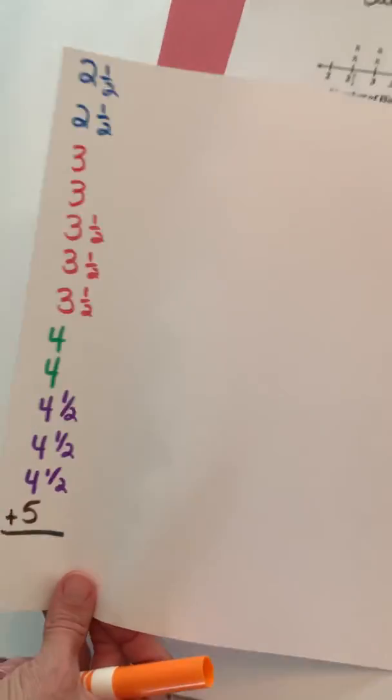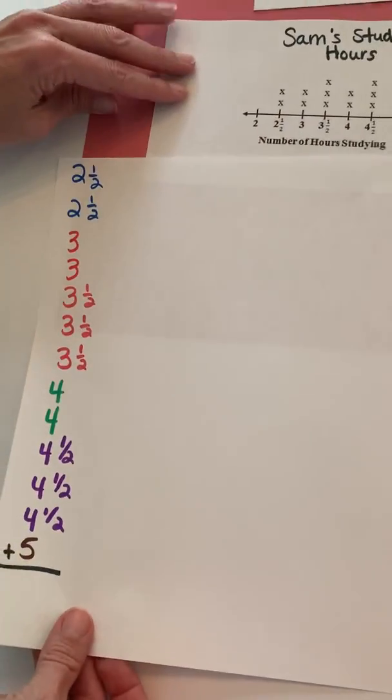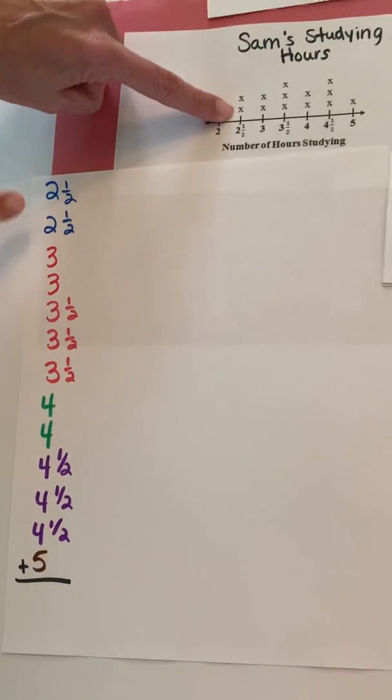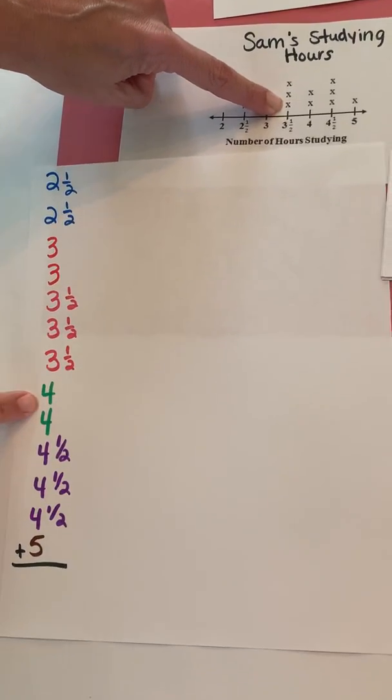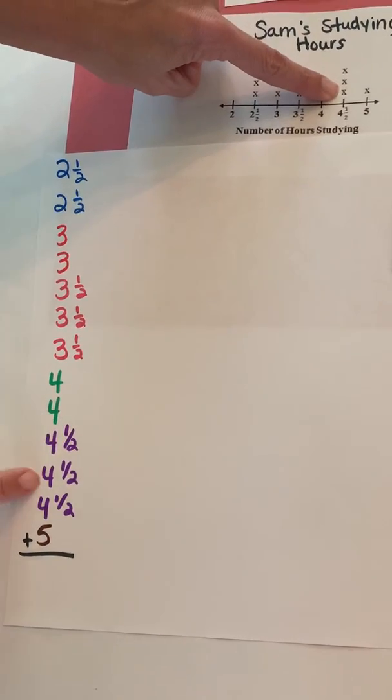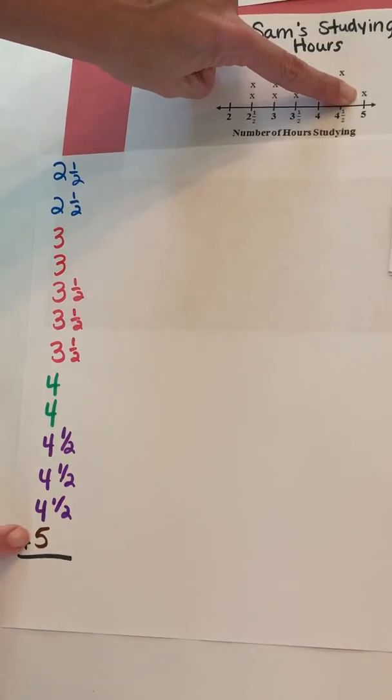So what I've done is I've gone ahead and written down all these times of studying. You can see I have two and a half, two and a half, two threes, three and a half three times, two fours, four and a half three times, and then five.